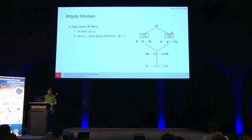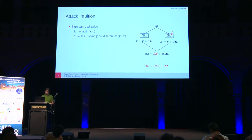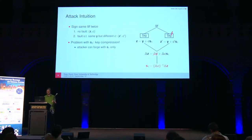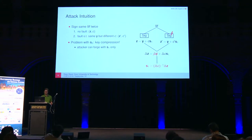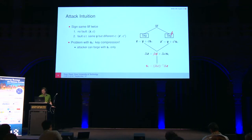Dilithium uses key compression, so you can't easily recover the second key part S2. But in the paper, we show that an attacker can still forge signatures even if they only have access to S1.